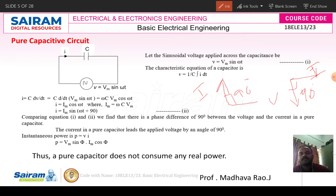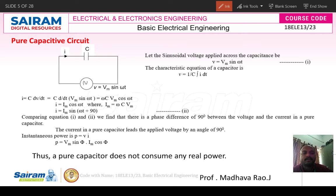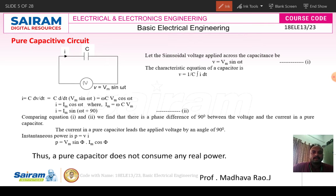You can draw the phasor diagram for the pure capacitor circuit using these two equations. Using the voltage and current equations you can find the power: P = Vi. Substituting equations 1 and 2, you can prove that P = 0. So a pure capacitor does not consume any power; it stores energy in the form of an electrostatic field.